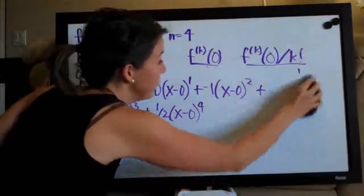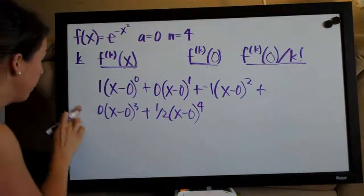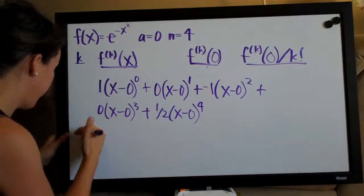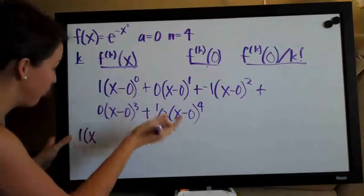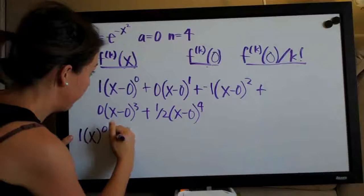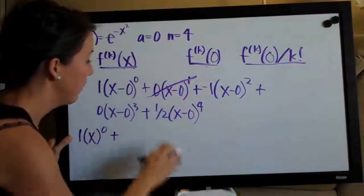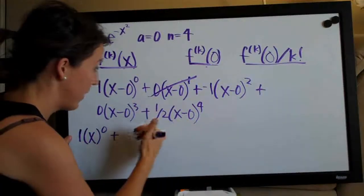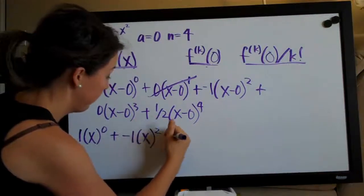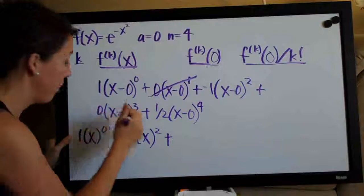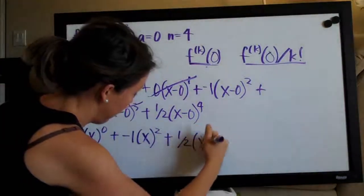So, now what we need to do is simplify. So, looks like up here we'll have one times x and because we have minus zero, that's just going to go away. So, we'll have x to the zero plus, this whole thing is going to go away because that's zero. We have a zero multiplied out in front there. So, then we've got negative one times x squared plus, again, zero out in front. So, that goes away. So, plus one half times x to the four.